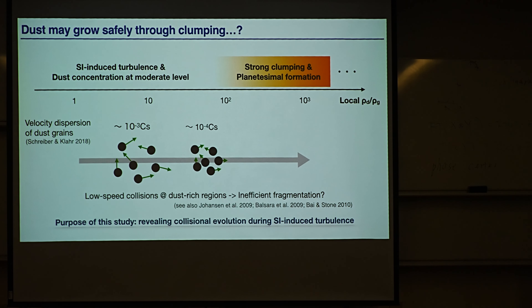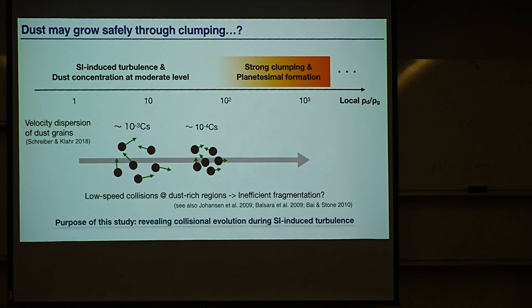There can also be a positive feedback process. Once streaming instability starts developing, dust grains become larger and the Stokes number increases. The resulting larger dust grains can promote further clumping because they participate more efficiently in the development of streaming instability. As a result, strong clumping becomes more efficient and planetesimal formation is accelerated. Dust coagulation during clumping will be important in planetesimal formation, but it has not been well studied yet. In this work, we tried to understand how efficiently and how fast dust grains grow in the turbulent state driven by streaming instability.